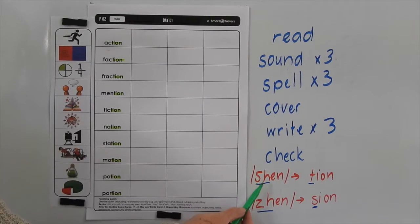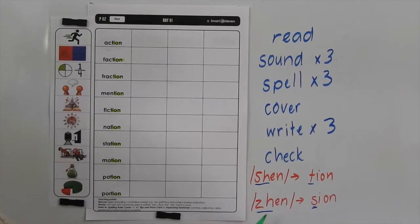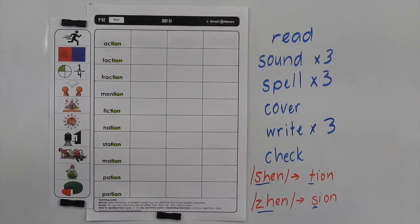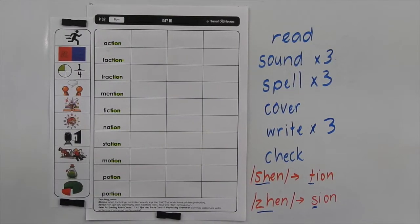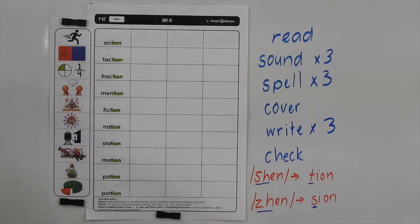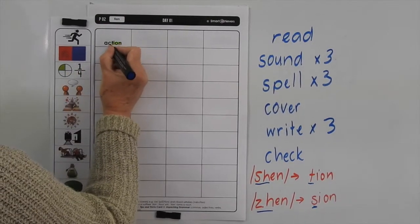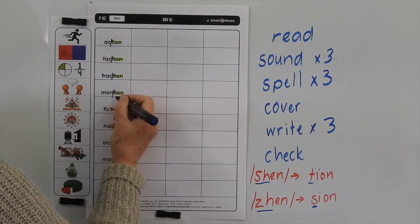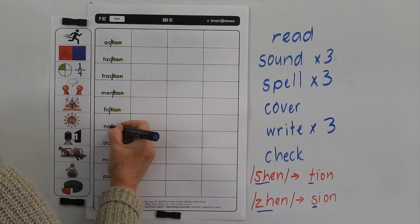So when you hear 'shun' at the end of a word, you know to write T-I-O-N. When you hear 'zhun', you're going to learn to write S-I-O-N. That's the easiest way we can explain it to you — there will come some other rules along with that later, but at this point in time, that's the easiest way. So if we break these words into syllables as well, it'll make it a lot easier to spell them. We're going to split before the 'shun', so we've got 'frac-tion', 'men-tion', etc.